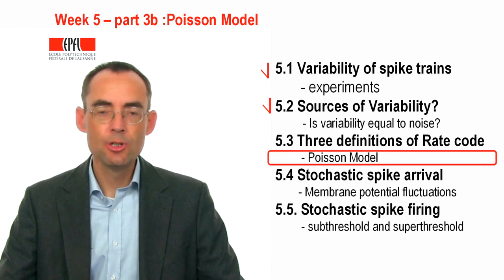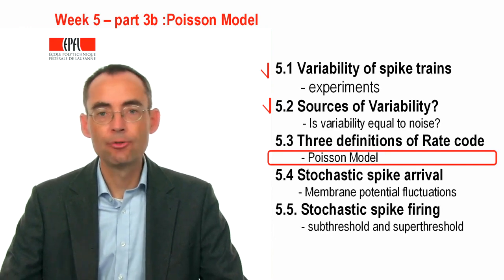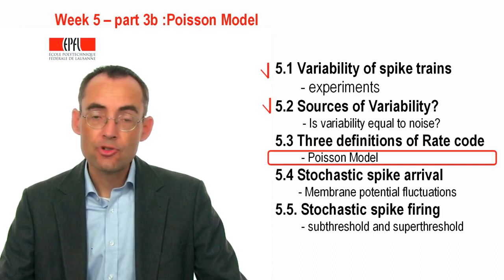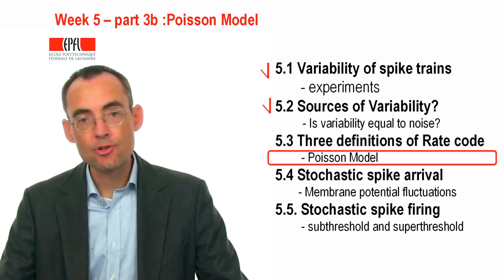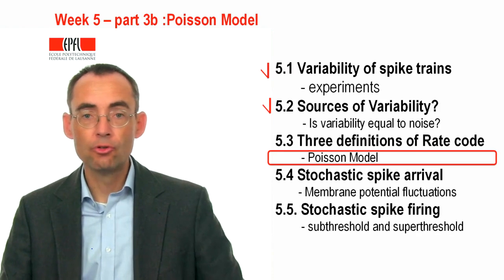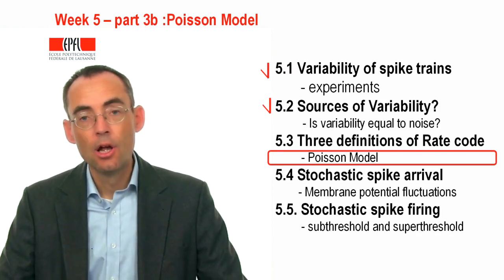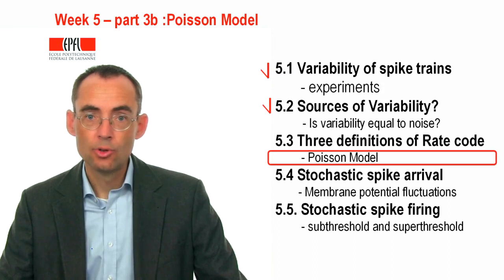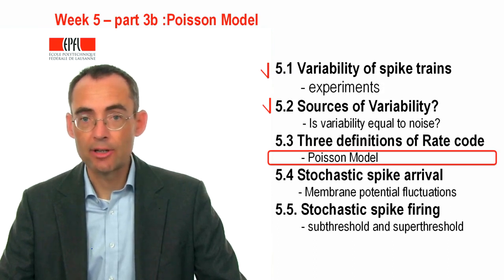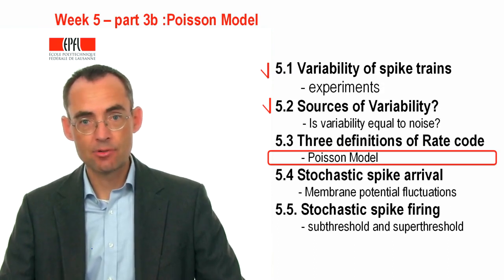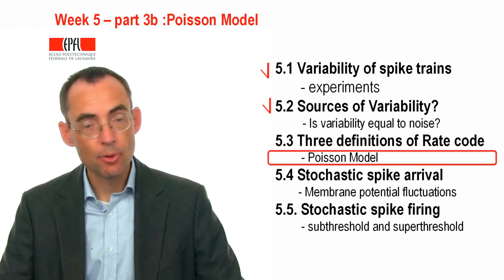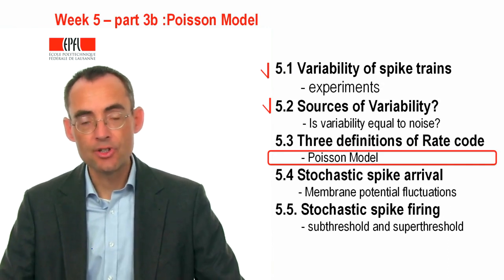Welcome back to the continuation of part 3 of week 5. I've just finished the discussion of the different definitions of rate coding. Rate coding is linked to the idea of stochastic firing. Stochastic firing can be described by a Poisson model, and the Poisson model is the topic of this video.